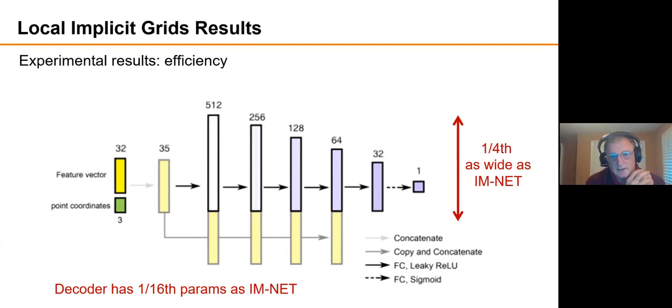And so we use a much smaller IM-NET style network for our decoder. It has one-sixteenth of parameters as IM-NET. And you have to evaluate eight of them for each point instead of one. So it is twice as many evaluations, but much, much, much less storage.